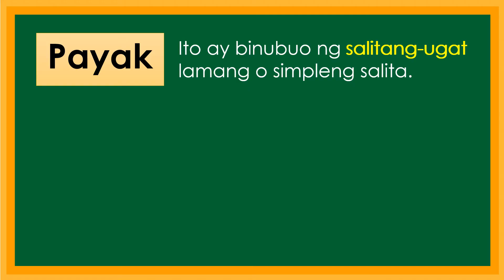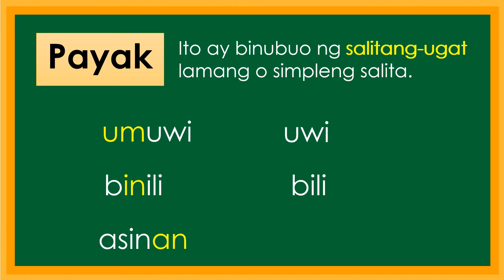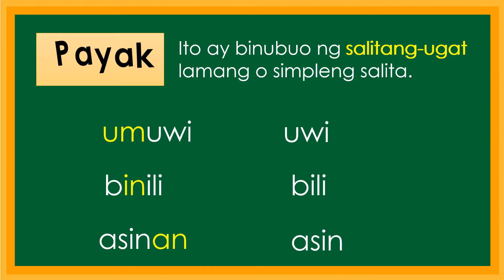Isa pa: umuwi — alin diyan ang salitang ugat? Tama, uwi. Binili — alin diyan ang salitang ugat? Magaling, bili. Asinan — alin diyan ang salitang ugat? Mahusay, asin. Ang uwi, bili, at asin ay mga salitang ugat na nasa anyo ng payak.